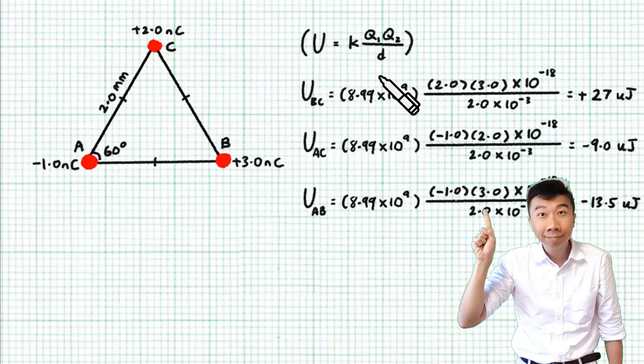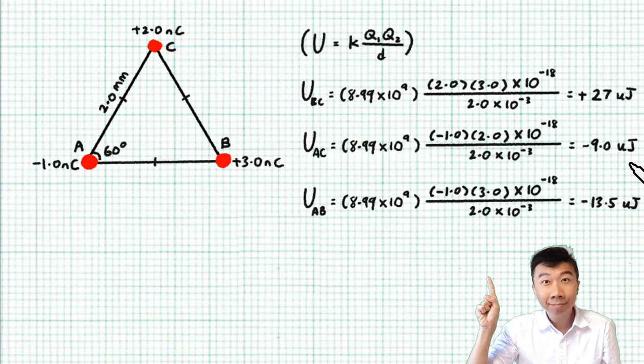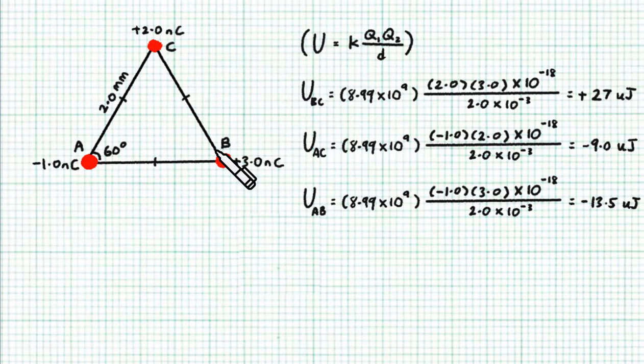Now notice that when it comes to calculating EPE when we use this formula it is very useful to include the signs of the charges because the math will naturally give you the correct signs for the EPE. So in assembling these three charges we are storing positive EP between B and C and negative EP between A and C and A and B.